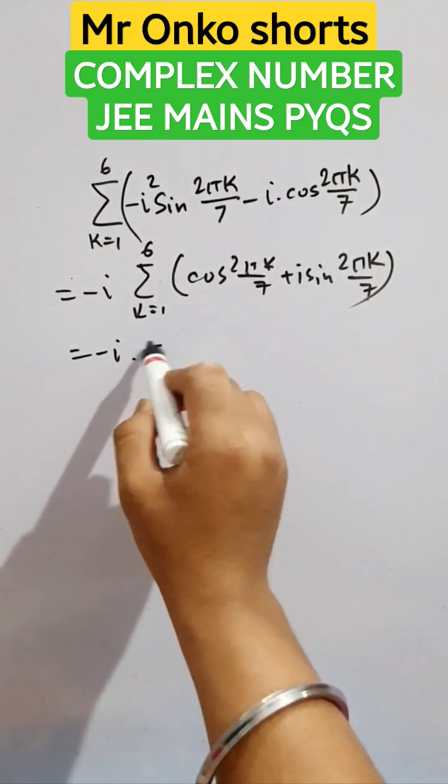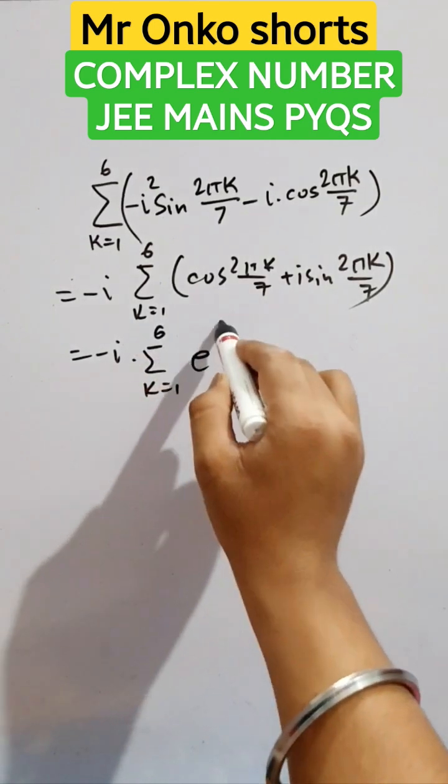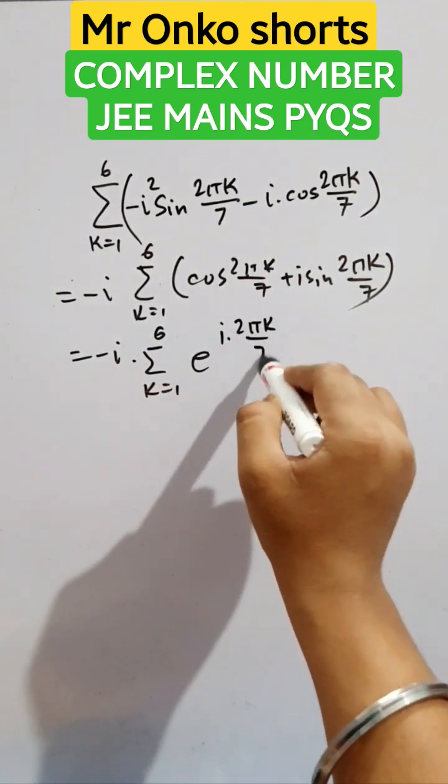We can write this as summation of k equals 1 to 6, e raised to the power i into 2 pi k by 7.